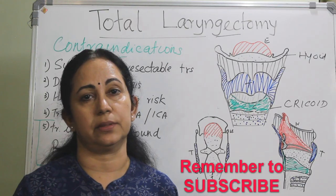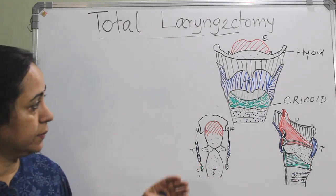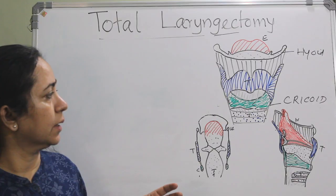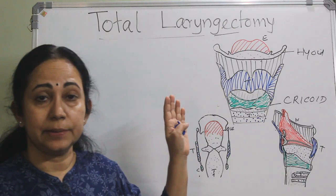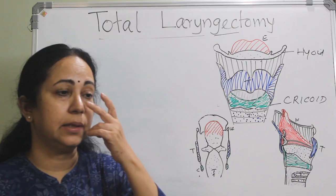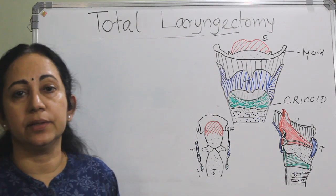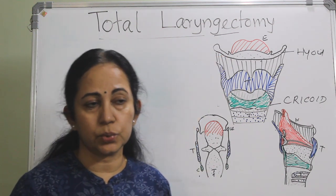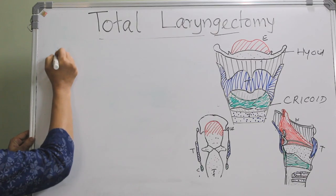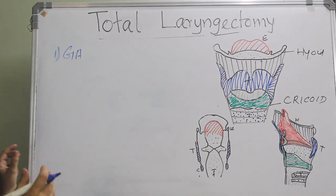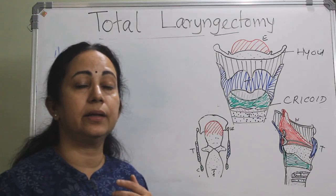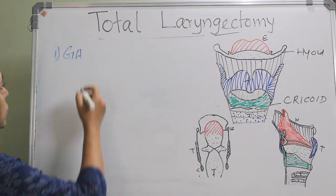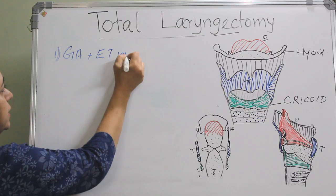Now, what are the steps of surgery? In total laryngectomy, the entire larynx including the pre-laryngeal muscles, the ipsilateral lobe of thyroid, and level 6 lymph nodes — that is, the pre-laryngeal lymph nodes — are removed from the hyoid bone down to the cricoid cartilage. The first step is general anaesthesia with endotracheal intubation. If a tracheostomy has already been done, the cuffed tube can be introduced through the stoma.